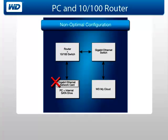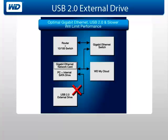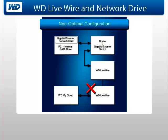Or, if you are using a router with a 10/100 switch connected on a separate gigabit ethernet switch, do not connect the personal computer directly to the router. We do not recommend that you attach a USB 2.0 external drive to your personal computer, as it will perform slower and limit your performance over a network. Our last example of non-optimal configuration is connecting Livewire to a network drive without connecting the network drive directly to the router and personal computer connections.